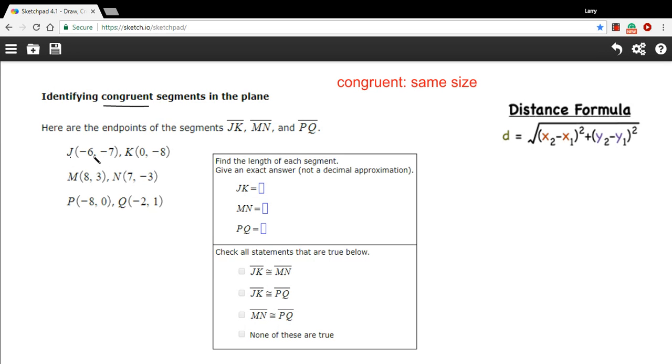What we can do is use the distance formula to find the distance between the endpoints. That will be the same thing as the length of the segment, so that's what we'll do. We'll find the lengths of each of these segments and then we'll just check off which of these statements are true down here. Let's start by applying the distance formula to the endpoints of segment JK.